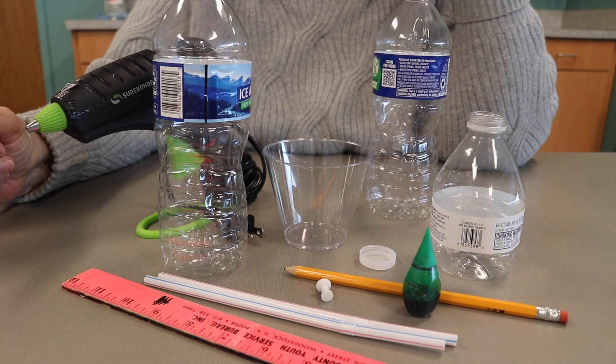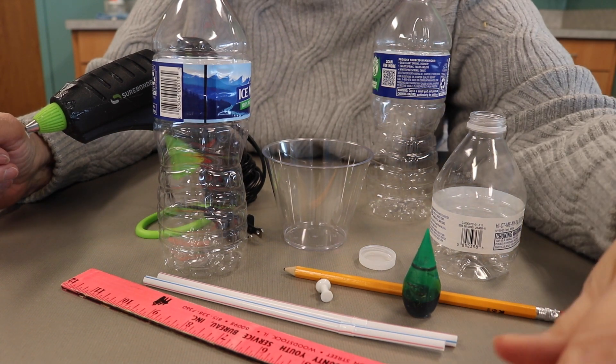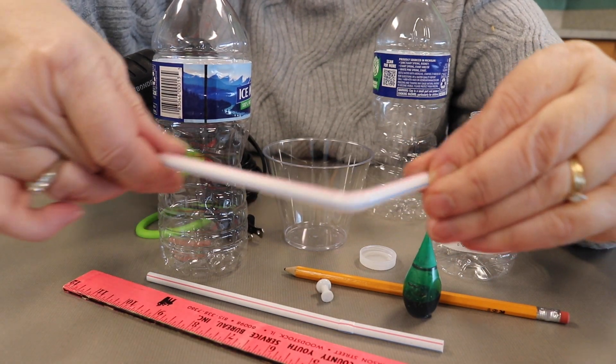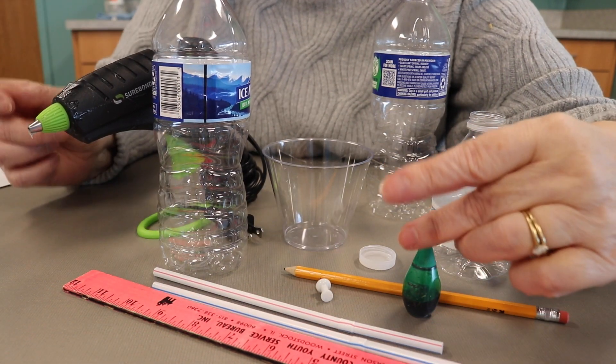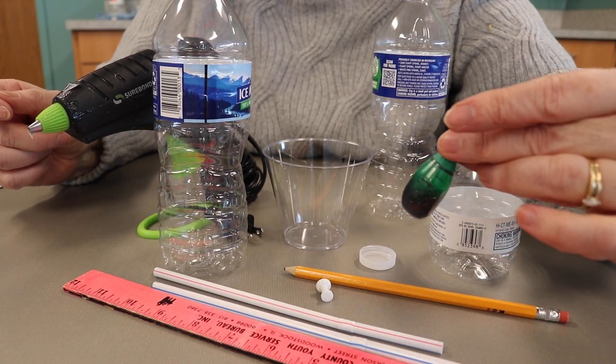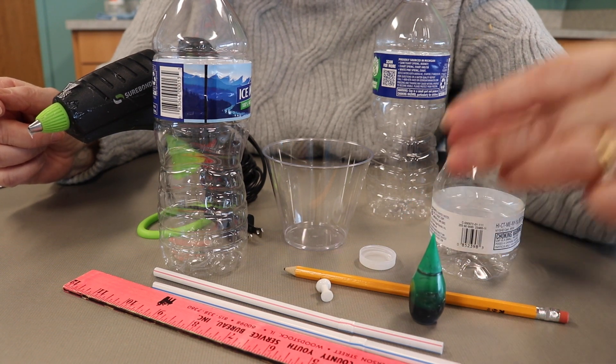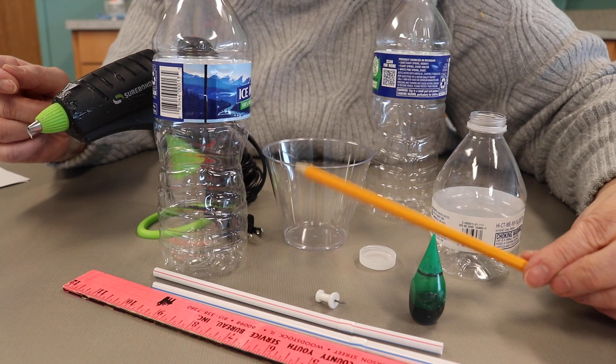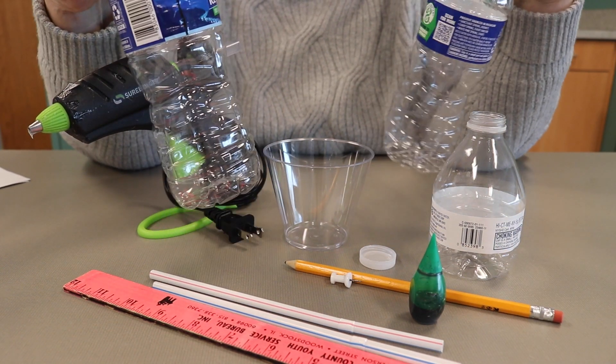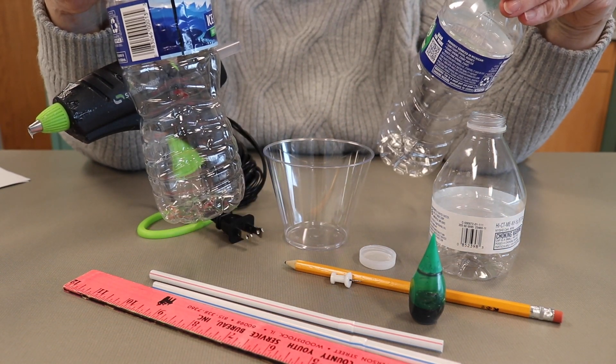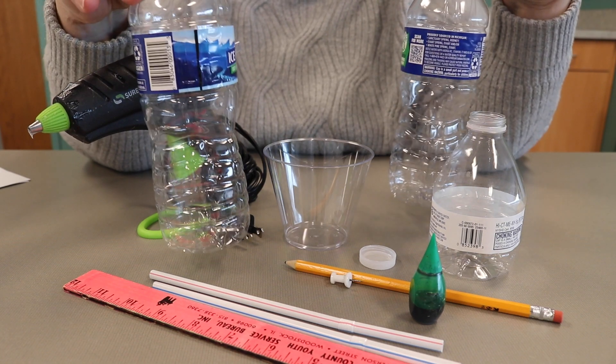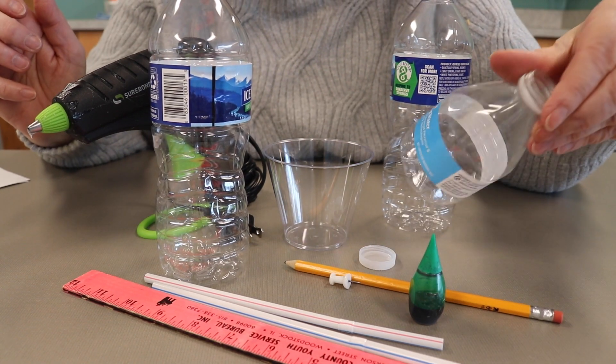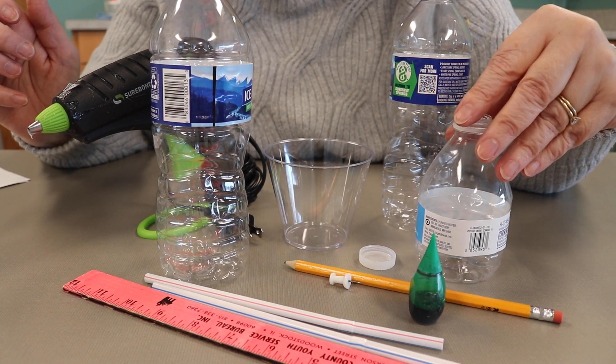This is what you'll need to do the siphon project: a ruler, two straws that are bendable, green food coloring or you could use blue or whatever color, just don't use yellow, a push pin, a pencil, two empty water bottles. I'm using 16.9 fluid ounces, but it doesn't matter as long as they're the same size. And this one is an eight ounce, a littler one which you need.